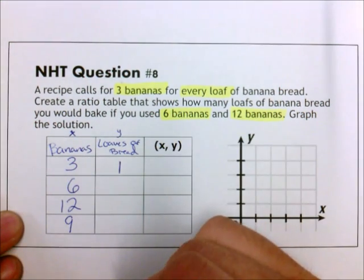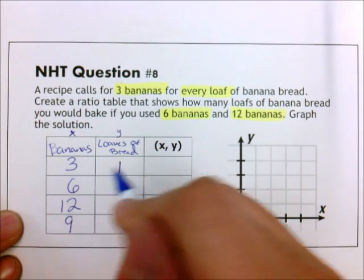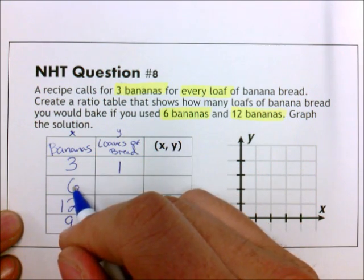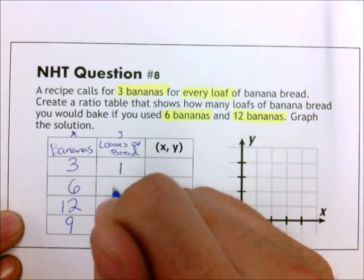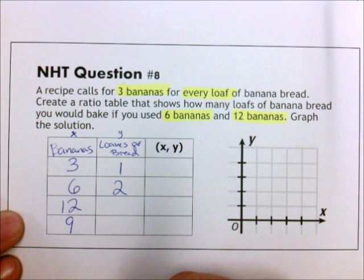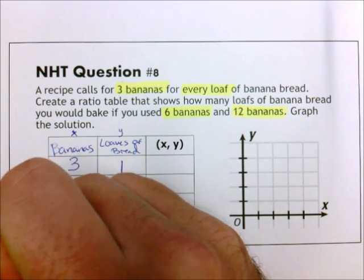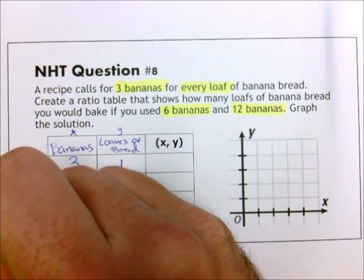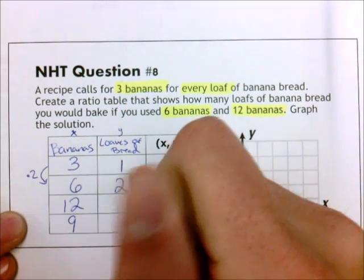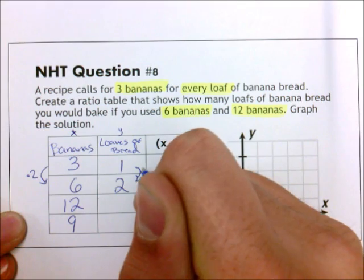If it's 3 bananas for one loaf, I double the amount of bananas, I double the amount of loaves. So I get 2. In a way that helps to explain it with the kids. How do I get from 3 to 6? I multiply by 2. So I multiply by 2.